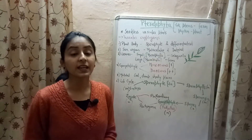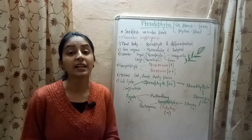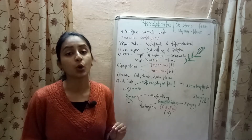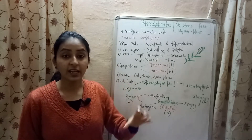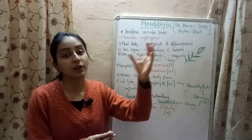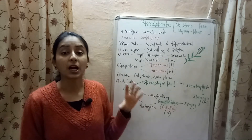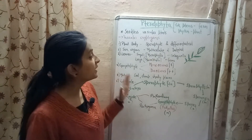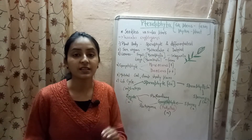In the life cycle of bryophytes and pteridophytes, two types of plant bodies are involved: sporophyte and gametophyte. In bryophytes, the main plant body is gametophytic. The gametophytic plant body makes the sporophyte, which produces spores, and those spores germinate to form gametophytes. But in pteridophytes, the main plant body is sporophytic, whereas the gametophytic plant body is short-lived.